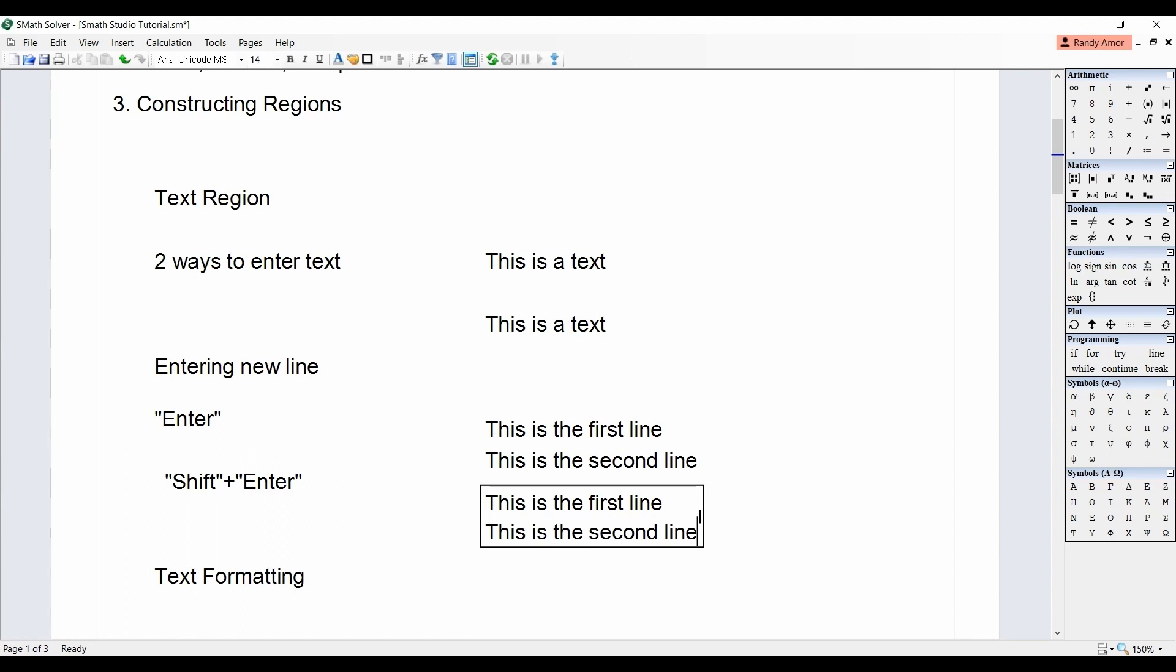The second method is by pressing SHIFT plus ENTER after typing the first line of text. As in the first method, the cursor will automatically move to the next line, then start typing the next line of text. The difference between the two methods is that in the first method, the two lines will become individual items in the worksheet. As you can see, you can select each of the lines individually. In the second method, the two lines belong to one item. As you can see, when you drag your mouse to either of the lines, both are being selected as one item.